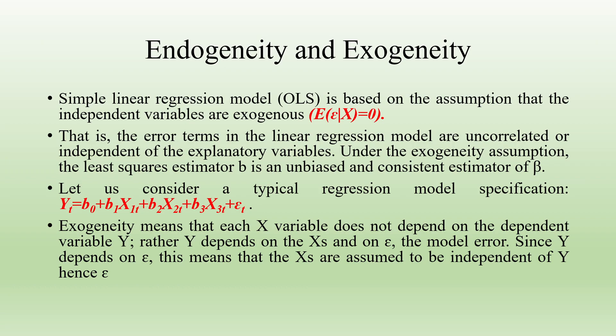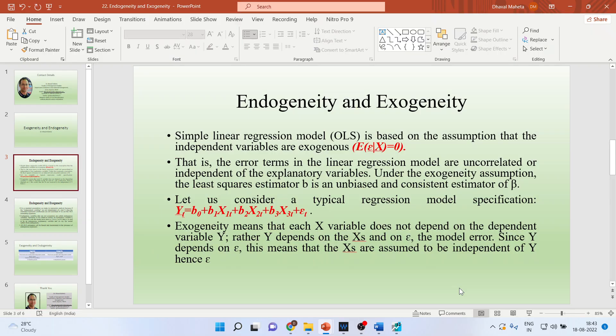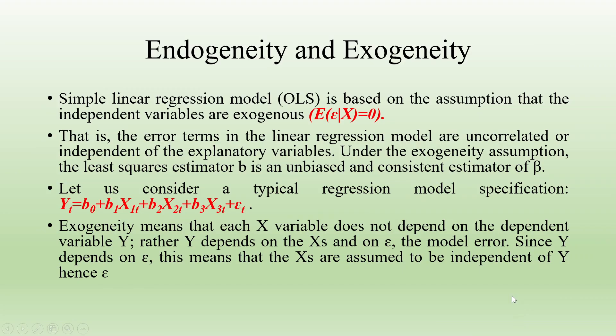The simple linear regression model OLS is based on the assumption that the independent variables are exogenous. That is, the error terms in the linear regression model are uncorrelated or independent of the explanatory variables. Under the exogeneity assumption, the least square estimator beta is an unbiased and consistent estimator of beta.